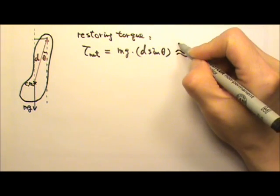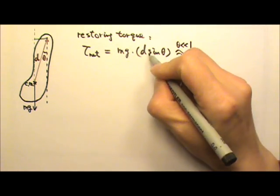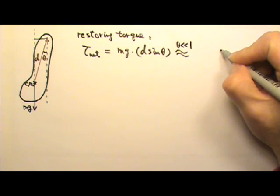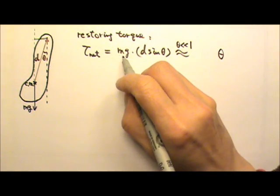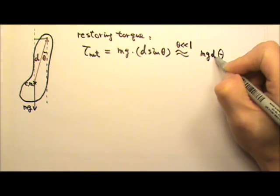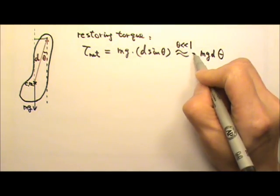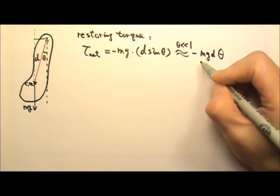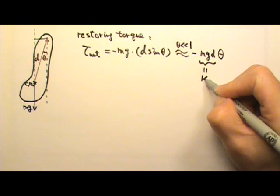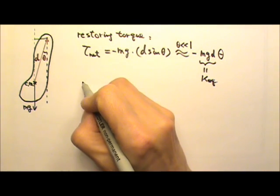For small angles, theta much less than 1, sine theta in radians is about the same as theta. So this is about the same as Mgd times theta. And this is the restoring torque, so we can put a negative sign here. This means Mgd is the equivalent kappa for the physical pendulum. That means omega, which is supposed to be the square root of equivalent kappa divided by I,